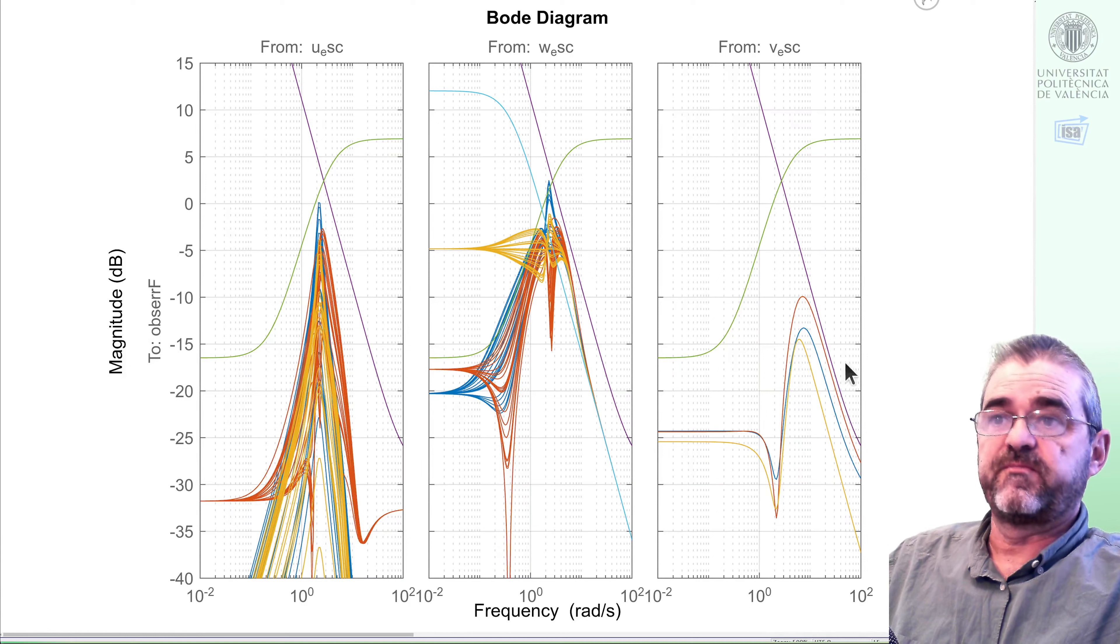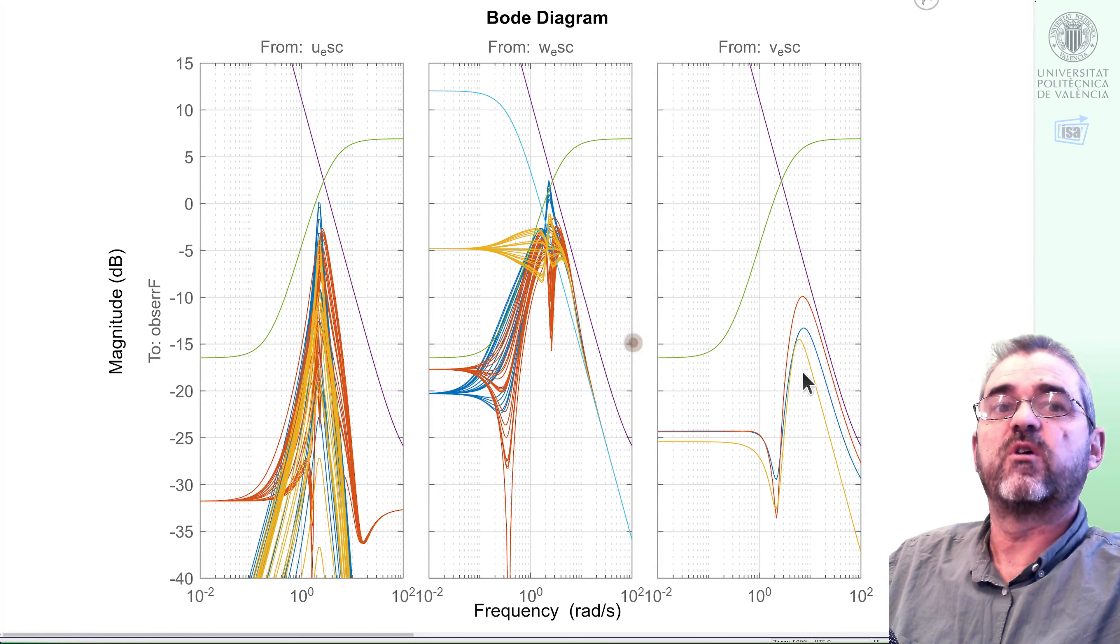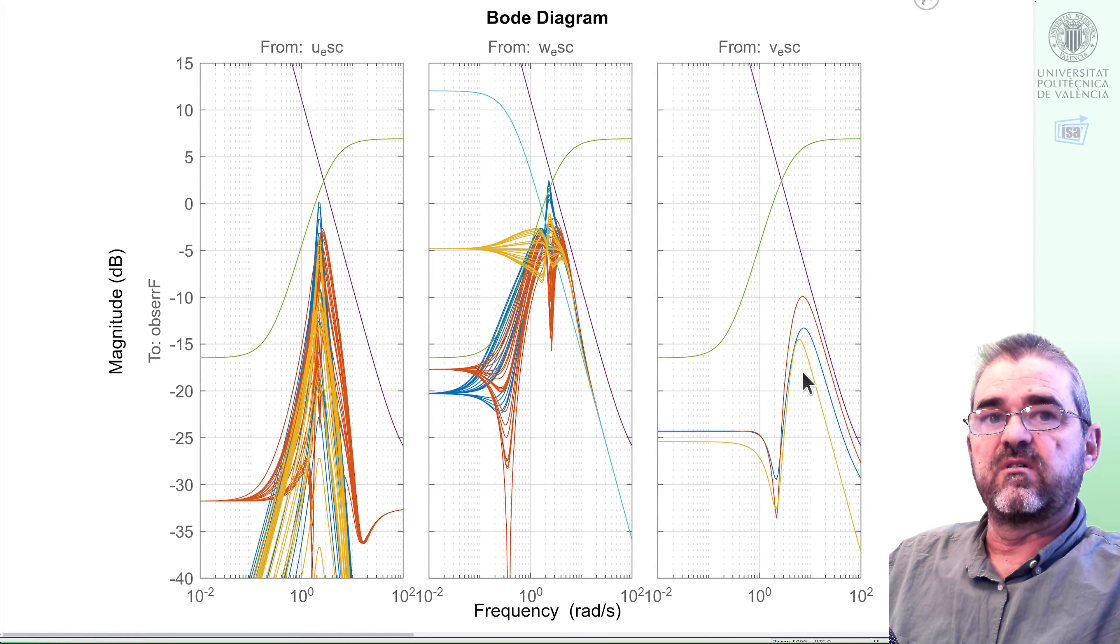Of course, even if we are showing here the bode magnitude to an individual input, what the optimizer is optimizing is the singular value, sort of square root of the sum of the squares of these bode magnitudes, with worst-case of all three inputs simultaneously and combined.